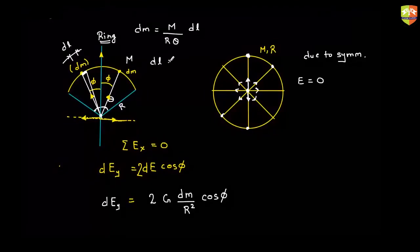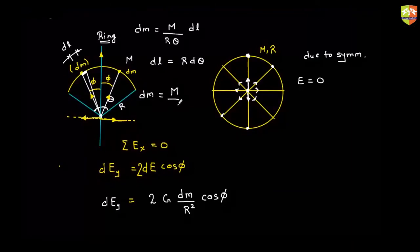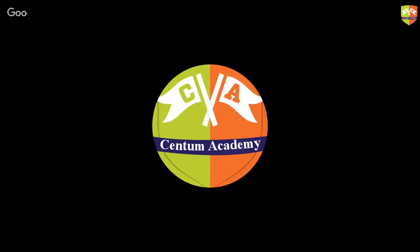So dm equals mass per unit length times dl. The arc length is R times theta, so dm = (M / (R·θ)) × dl. From the definition of angle, dl = R dφ. Therefore dm = (M/θ) dφ. Substituting, dEy = 2G × (M/θ) × (1/r²) × cos(φ) dφ.